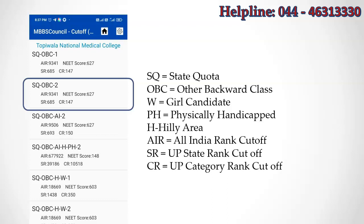You can see the Topiwala National Medical College cutoff screen here. SQ denotes Maharashtra state quota, OBC denotes other backward class reservation, AI denotes All India reverted seats from round 2 counselling, H denotes hilly area quota, and W denotes woman candidate. The last number denotes the counselling round. You should consider the second round cutoff as the final round cutoff for government colleges. So 9341 was the All India rank cutoff, 685 was the state rank cutoff, and 147 was the OBC category rank cutoff.